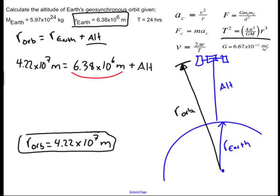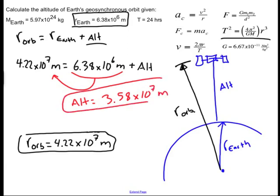r orbit is equal to the radius of the earth plus the altitude. So basically I just need to subtract that quantity off of that bigger number. And I find that the altitude is equal to 3.58 times 10 to the 7 meters. And that is my final answer.